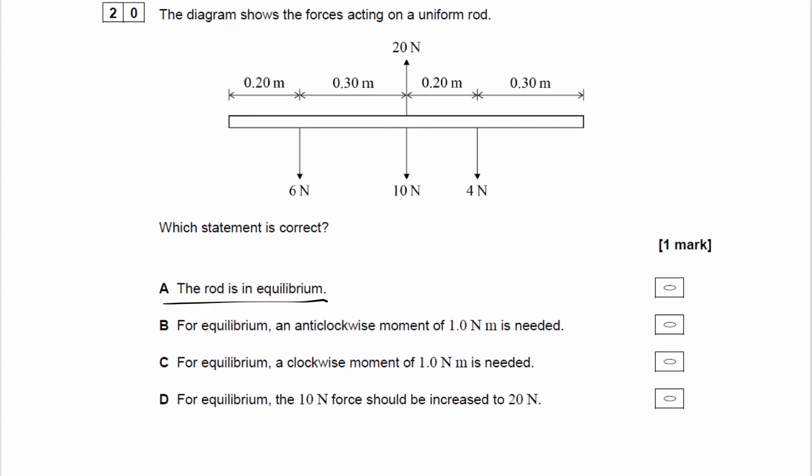The first statement is the rod is in equilibrium. So there are two conditions for equilibrium. One of them is that there must be no resultant force on the object. And in this case,